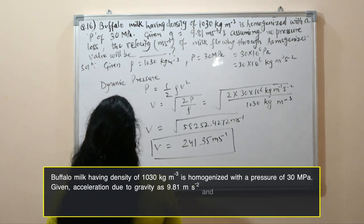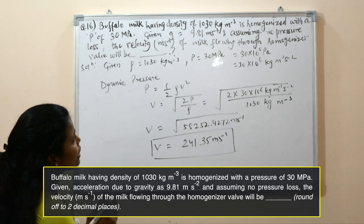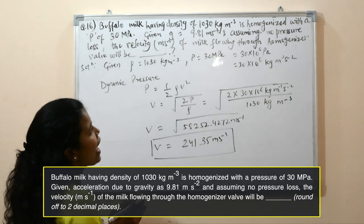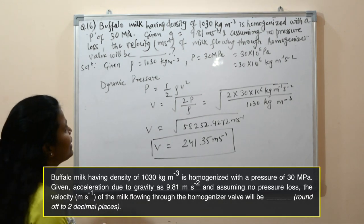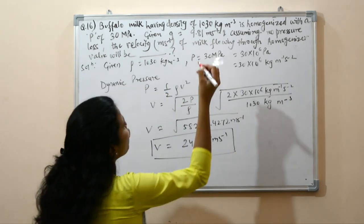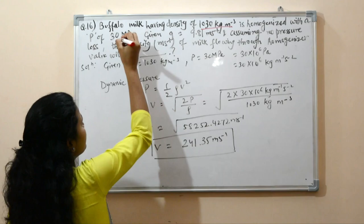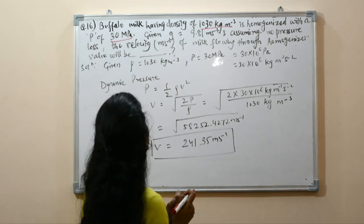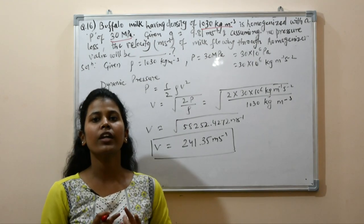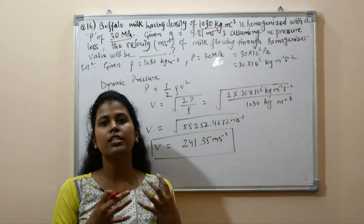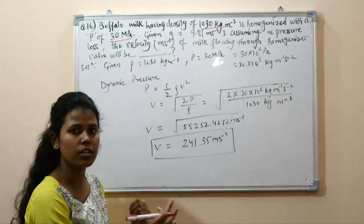Question number 16: milk with density 1030 kg/m³ is homogenized at a pressure of 30 MPa. Given g = 9.81 m/s² and assuming no pressure loss, find the velocity of milk flowing through the homogenizer. We use the concept of dynamic pressure, which relates the kinetic energy of the fluid to pressure: P = ½ρv². Solving for velocity: v = √(2P/ρ).